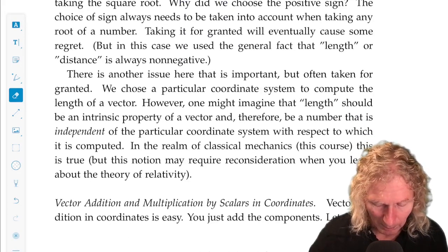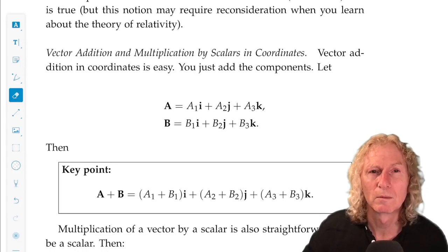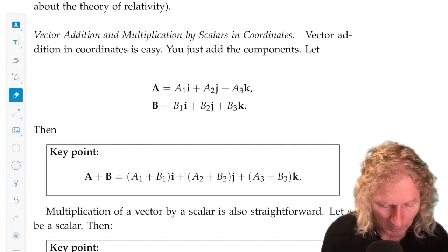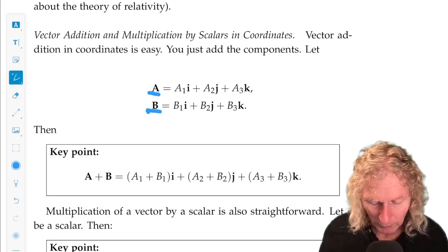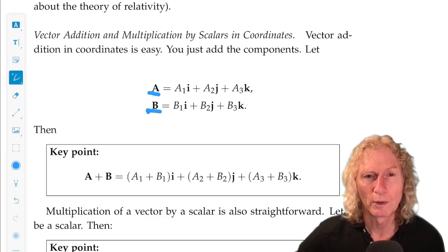Now, we can talk about vector addition and scalar multiplication of vectors. So, let's take two vectors, a and b, and write out the representation in this Cartesian coordinate system.